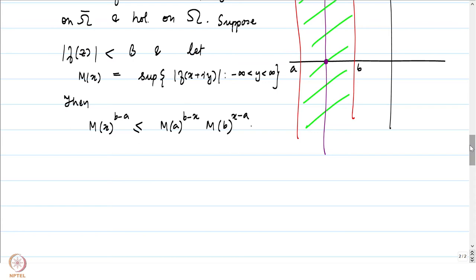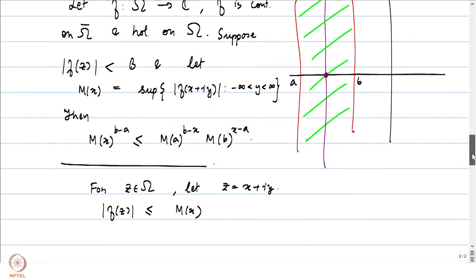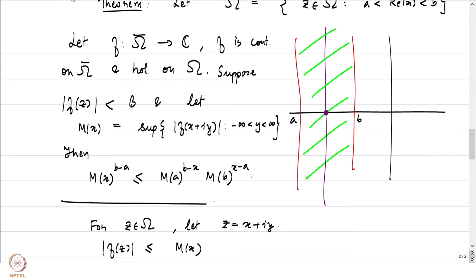It does not matter what B is — the moment we know the function is bounded, we can conclude that |F(z)| is less than or equal to the absolute value on the boundary. Let us now give a proof of this statement. The theorem states that if F is holomorphic on the green shaded region and continuous on the closure, then M(x), the supremum on the vertical line hitting the real axis at x, satisfies this particular inequality.